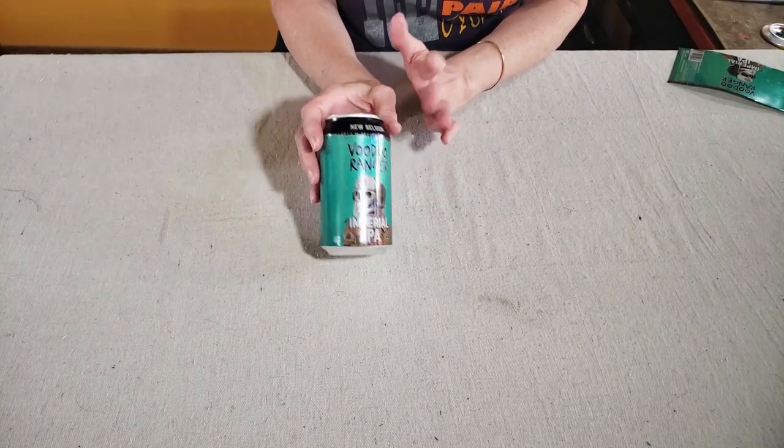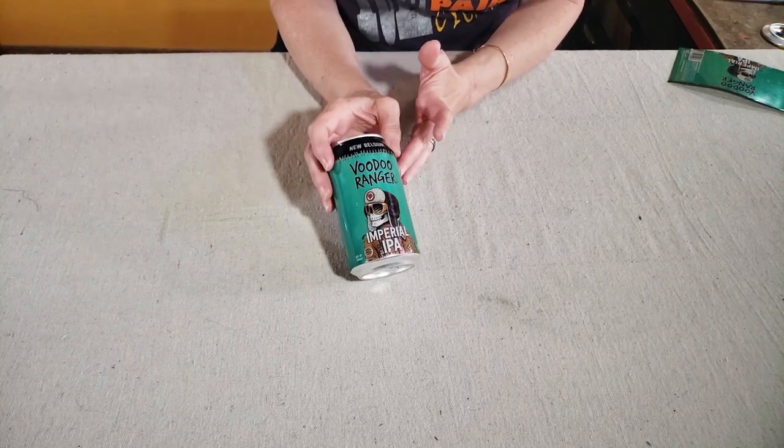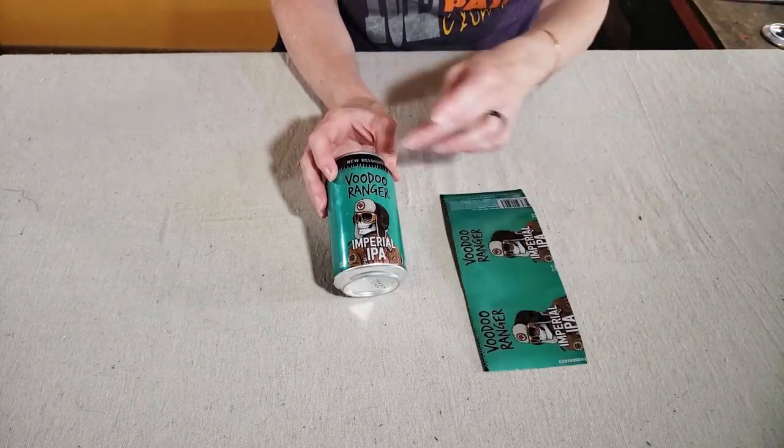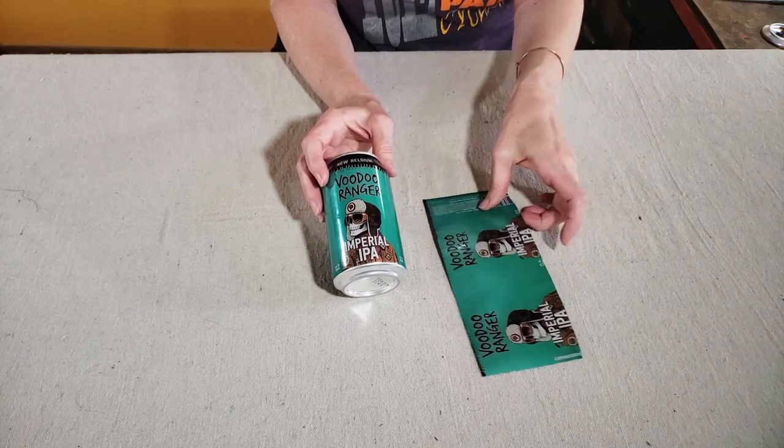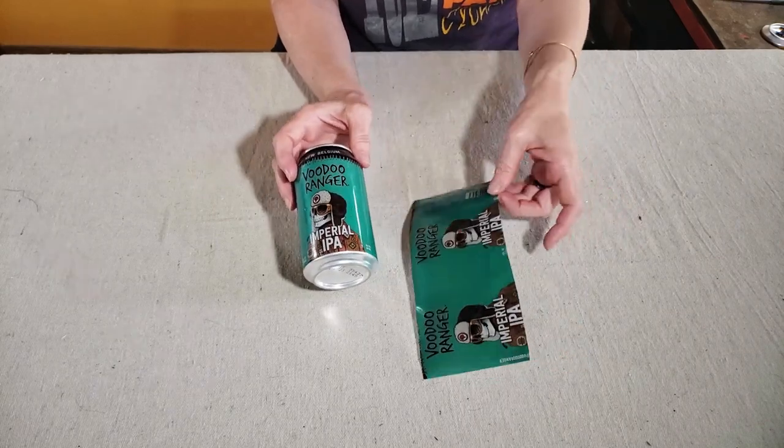The first thing you need is one aluminum can for each bumblebee. And you want to go ahead and cut the top and bottom off and flatten out the sides into a flat sheet like this.